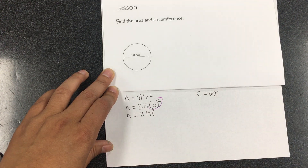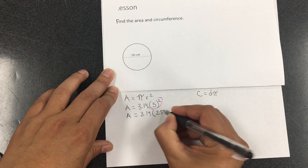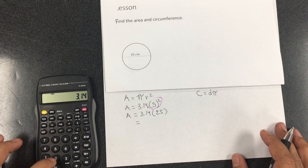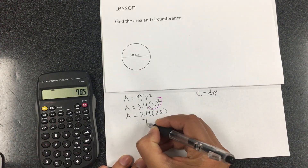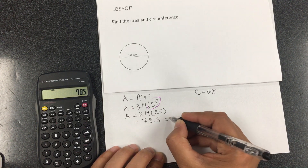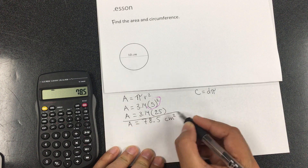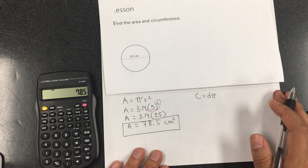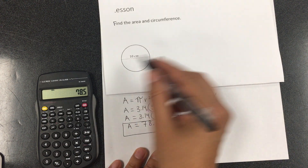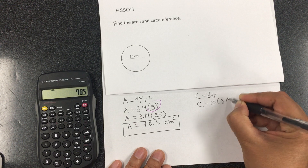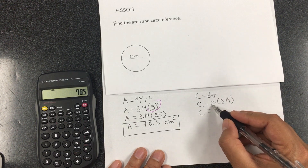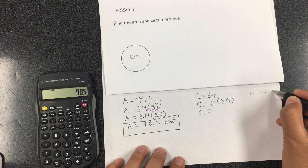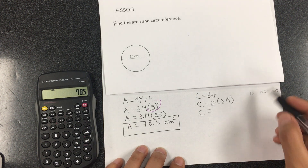Now for the area, we're going to be using this formula, so I'm going to put it on the side. I have a circle here. Some people were saying pizza. So if we're talking about the crust, that's circumference. But if we're talking about the place where you have the pepperoni, the cheese, the sauce, then that's going to be your area — the area of the pizza.